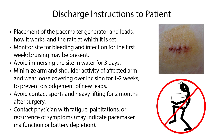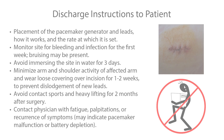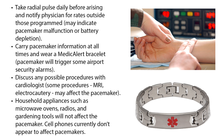Discharge instructions to teach the patient include placement of the pacemaker generator and leads, how it works, and the rate at which it is set. Monitor the site for bleeding and infection for the first week, as bruising may be present. Avoid immersing the site in water for 3 days. Minimize arm and shoulder activity of the affected arm and wear loose covering over the incision for 1–2 weeks to prevent dislodgement of new leads. Avoid contact sports and heavy lifting for 2 months after surgery. Contact the physician with fatigue, palpitations, or recurrence of symptoms, as this may indicate pacemaker malfunction or battery depletion. Take the radial pulse daily before arising and notify the physician for rates outside those programmed. Carry pacemaker information at all times and wear a medic alert bracelet.